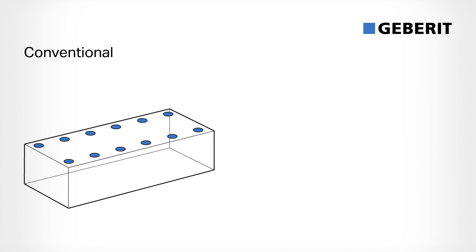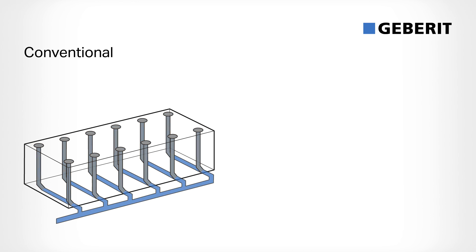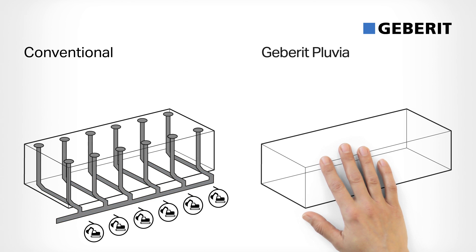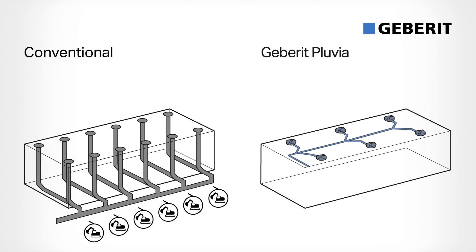Conventional drainage systems require several roof outlets and discharge stacks, plus a complex network of underground pipes. The Geberit Pluvia system, however, requires far fewer roof outlets. And it has smaller pipe dimensions, fewer pipes, fewer discharge stacks and fewer connections to the sewage system.